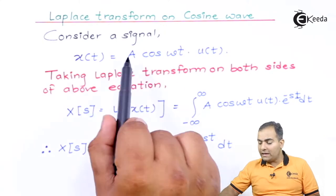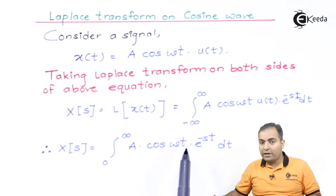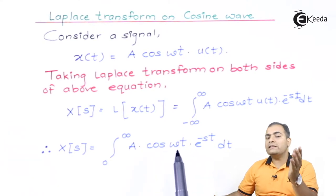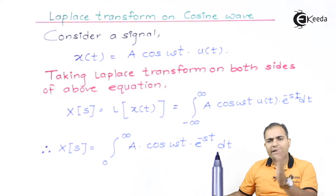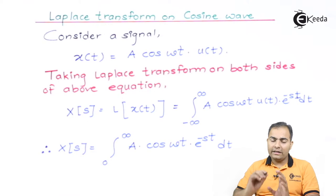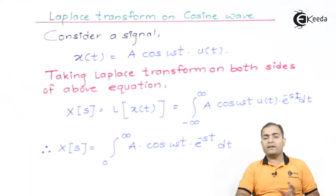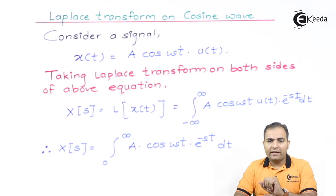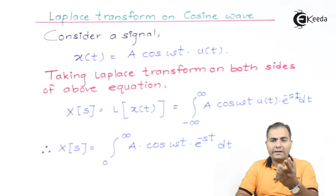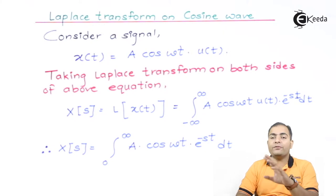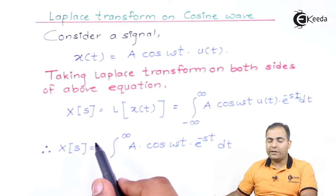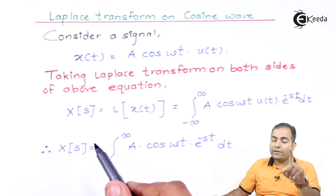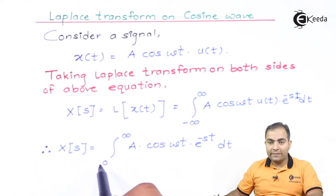My x(t) is A·cos(ωt)·u(t). The unit step function represents that the function is causal, meaning it is available from 0 to infinity — only a right-handed signal. This function transforms well in the Laplace domain if it is a right-handed signal. The amplitude of unit step on the left-hand side is always 0, whereas on the right-hand side the amplitude of unit step is 1.